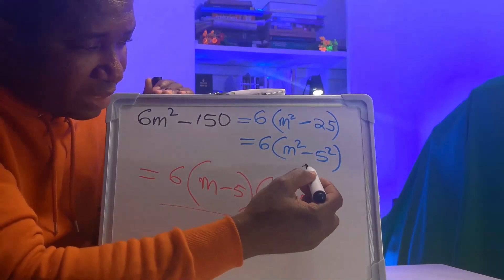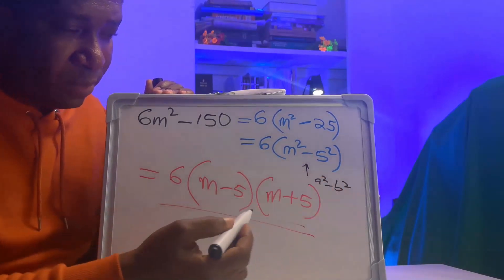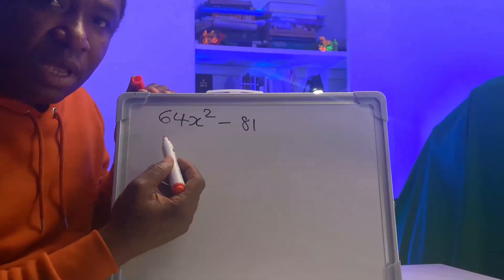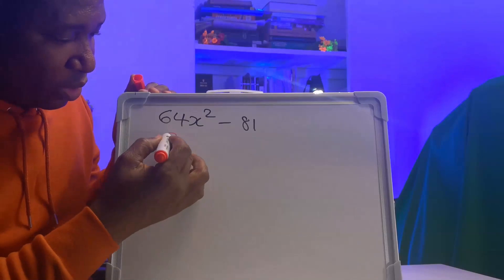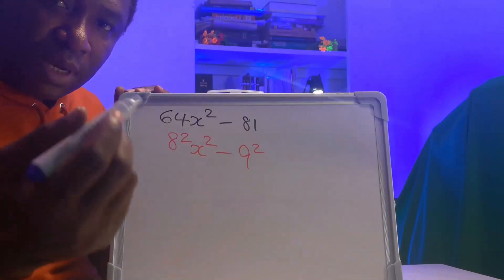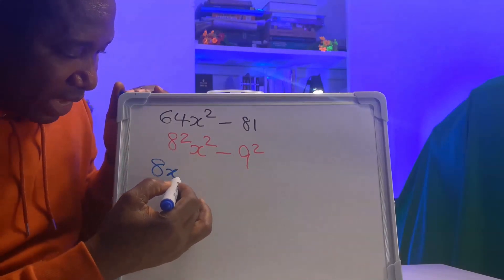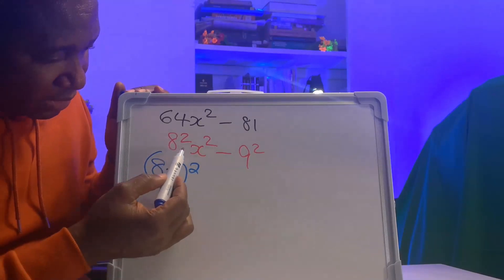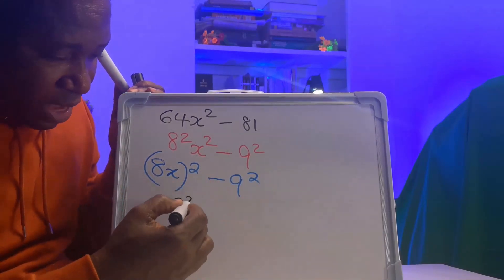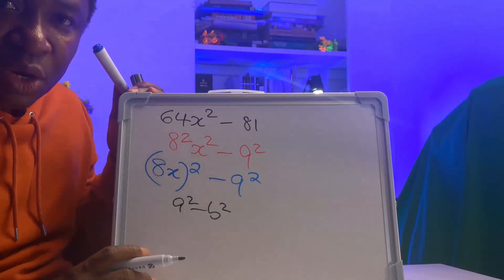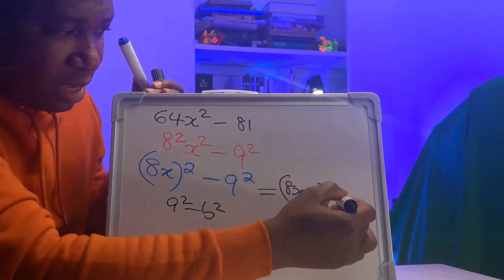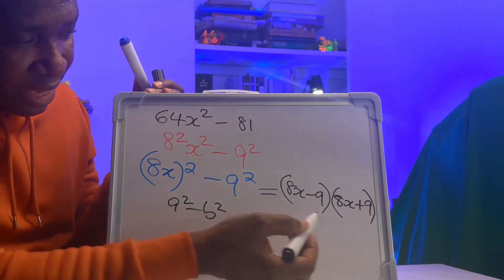Remember, inside this bracket we can express m squared minus 25 as a squared minus b squared, which is difference of two squares. Now let's express 64x squared minus 81 as difference of two squares. 8 squared gives 64, so we have (8x) squared minus 81, and 81 is 9 squared. We can write (8x) squared minus 9 squared. Applying the formula gives (8x minus 9) in brackets times (8x plus 9) in brackets.